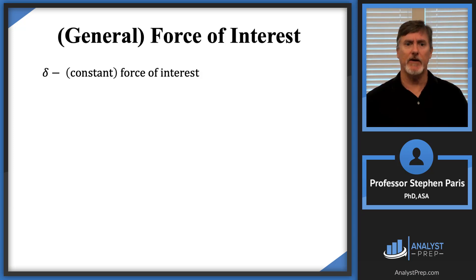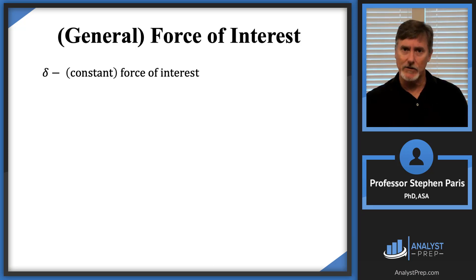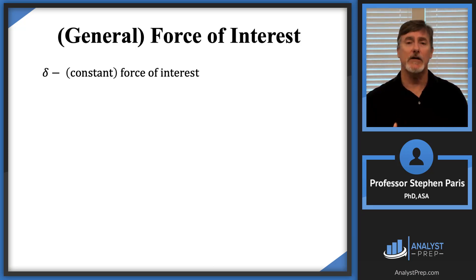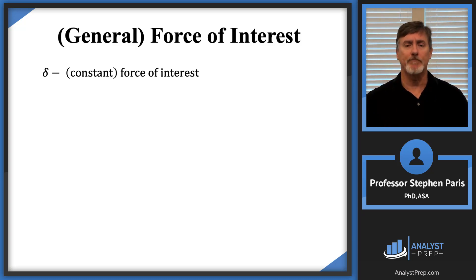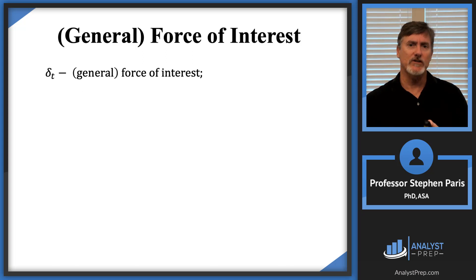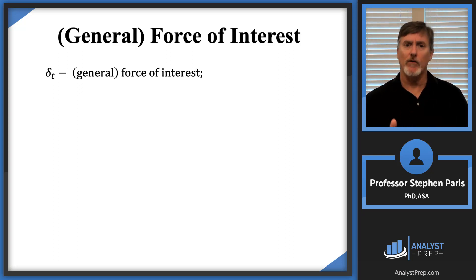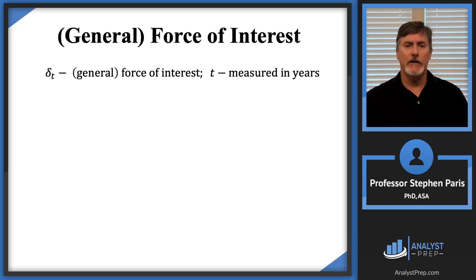We've talked a little bit about force of interest in the constant framework. We had a delta that represented a constant force of interest, and you can think of that delta as the continuously compounded interest rate. Now I want to generalize that a little bit. I'm going to add a subscript of t on my delta, and I'm going to call this the general force of interest. t is going to be measured in years.